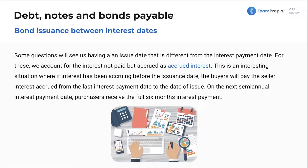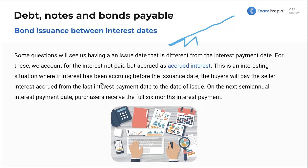Bond issuance between interest dates — some questions will have an issue date that's different from the interest payment date. That's what causes interest expense to keep going up, accruing, and then getting paid down. We account for unpaid interest as accrued interest, just like a credit card. If interest has been accrued before the issuance date, the buyers will pay the seller interest accrued from the last interest payment date to the date of issue.